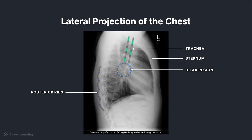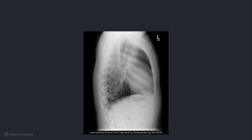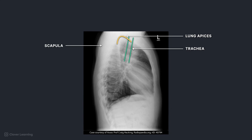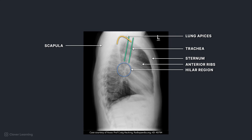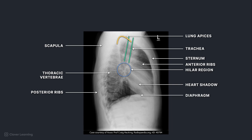The anatomy demonstrated on the lateral chest radiograph from superior to inferior includes the lung apices, scapula, trachea, sternum, ribs, hila region, heart shadow, thoracic vertebrae, posterior ribs, diaphragm, costophrenic angles, and gastric bubble. Were you able to correctly identify the anatomy of the chest on both projections?